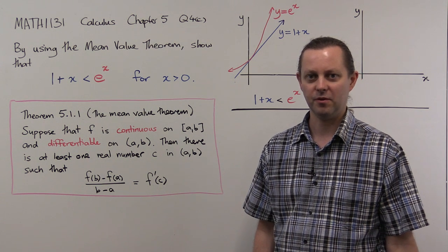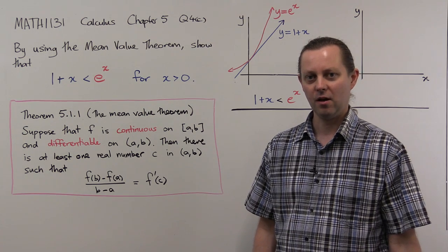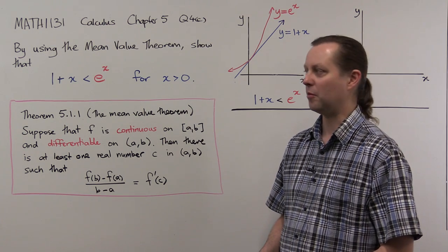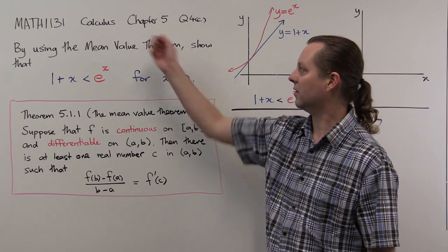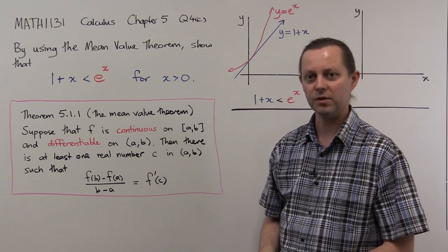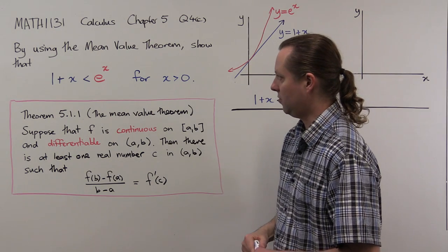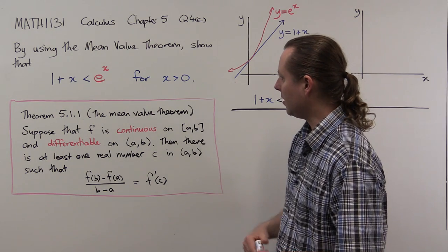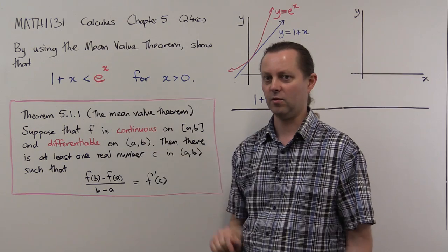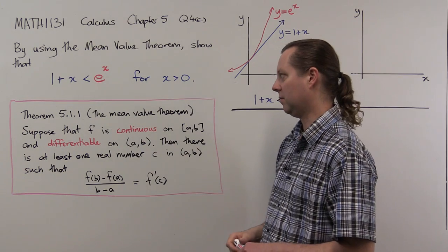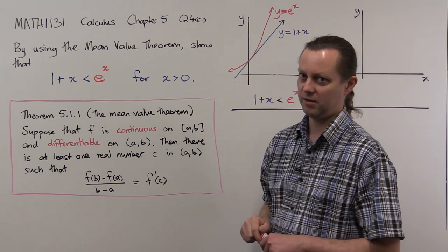Hello, I'm Jonathan Cress from the University of New South Wales and I'm going to explain how to solve one of the problems from Math 1131 Calculus. It's chapter 5, question 4c. In this question you're asked to use the mean value theorem to prove this inequality: 1 plus x is less than e to the x for x greater than 0.